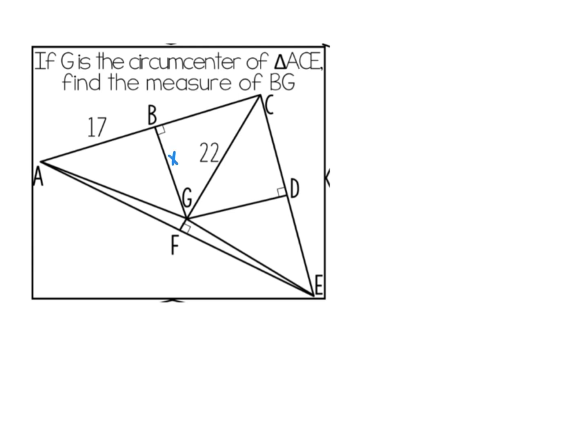So I'm going to find the measure of BG. I'm looking for this value right here. Now I'm going to focus on this triangle right here. Keep in mind, if BG is a perpendicular bisector, if this segment is 17, B is my midpoint, which means BC must also be 17.